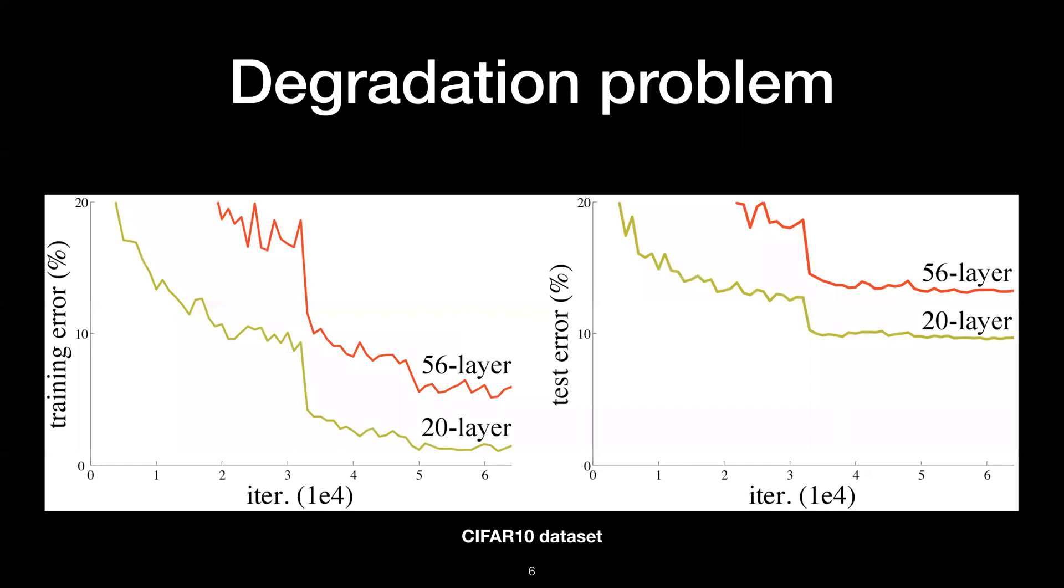Before we talk about the Residual Network, we need to know what is a degradation problem. This graph shows the training error on CIFAR-10 with 20 layer and 56 layer plain network, which means these networks do not have identity connection. As you can see from this graph, even though 56 layer has more expressive power and capacity, it does not overfit but underfits to the data. The training error on 56 layer is much higher than 20 layers, so we cannot say the model overfitted.